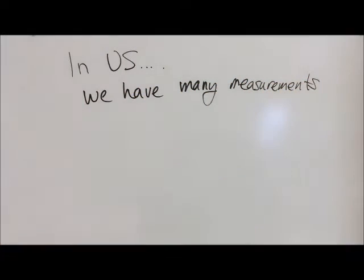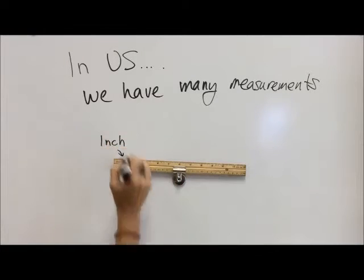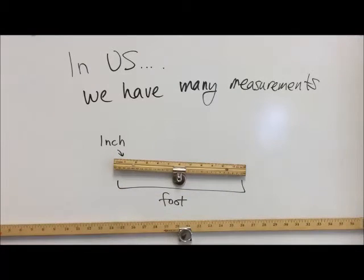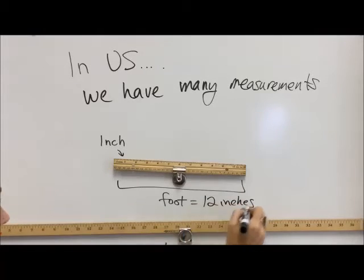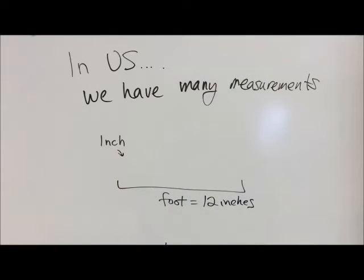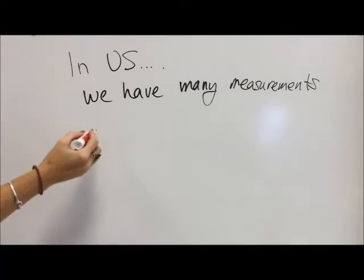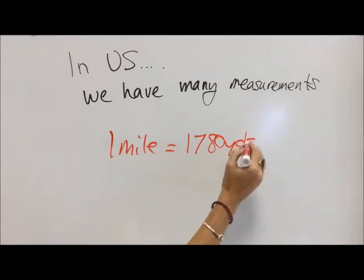In the U.S. we have tons of measurements of distance and we all walk around and act like they just make so much sense and they're so simple, but they kind of don't. We got the inch and then we got the foot. There's 12 inches in a foot and then we got the yard and there's three feet in a yard and there's also 36 inches in a yard and that's just shenanigans. And within the inch we got like fractions and stuff and they don't make much sense either.